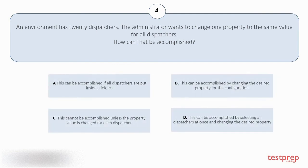Your options are: A. This can be accomplished if all dispatchers are put inside a folder. B. This can be accomplished by changing the desired property for the configuration. C. This cannot be accomplished unless the property value is changed for each dispatcher. D. This can be accomplished by selecting all dispatchers at once and changing the desired property.